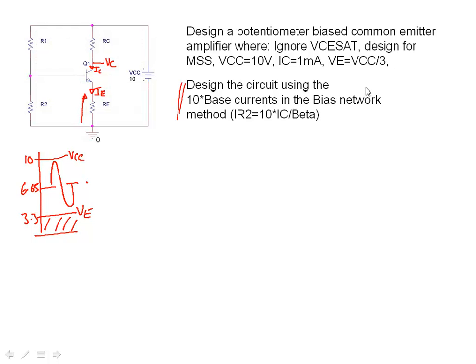In this case, I've missed off the spec here—beta equals 160. So RE, the emitter resistance, is equal to VE divided by IC. That's 3.3 volts divided by 10 to the minus 3, 1 milliamp, equals 3.3K. There we go, so there's our emitter resistor designed.